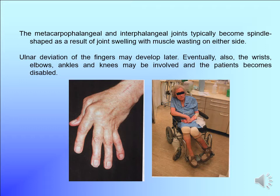The metacarpophalangeal and interphalangeal joints typically become spindle-shaped as a result of joint swelling with muscle wasting. Ulnar deviation of the fingers may develop later. Eventually the wrist, elbow, ankle, and knee may also be involved, and the patient may become disabled — having difficulty rising from a chair.